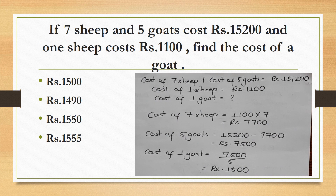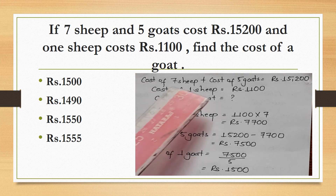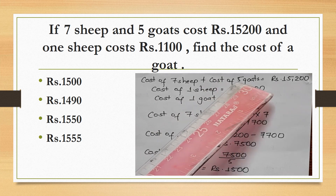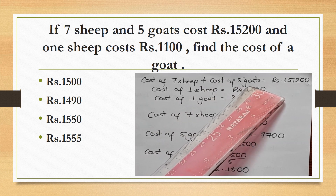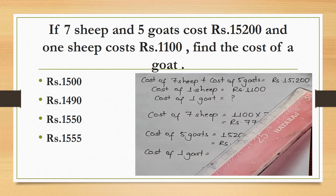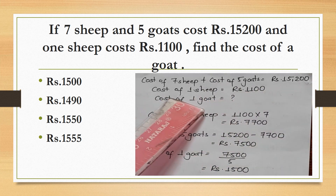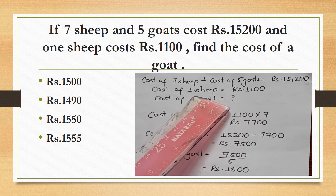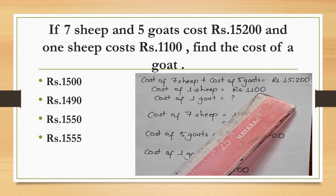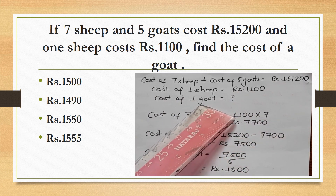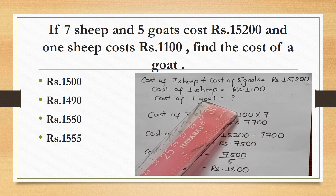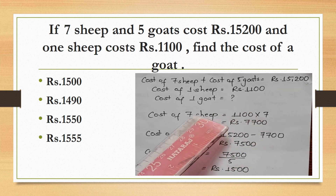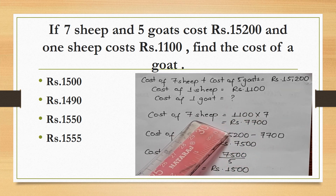If 7 sheep and 5 goats cost Rs.15,200 and 1 sheep costs Rs.1,100, find the cost of a goat. Total cost of 7 sheep and 5 goats = Rs.15,200. Cost of 1 sheep = Rs.1,100.